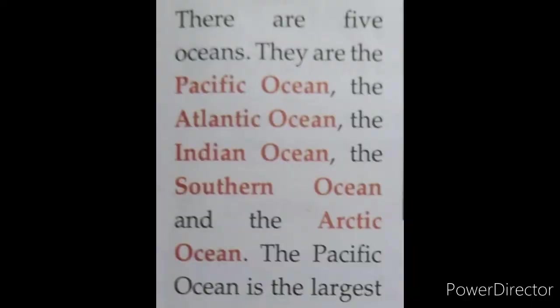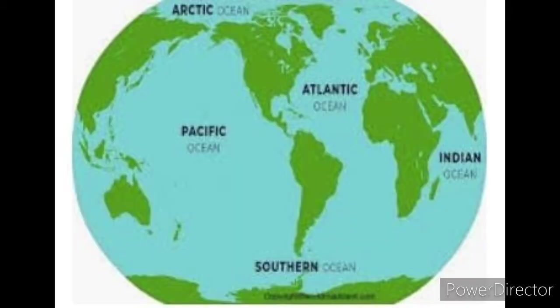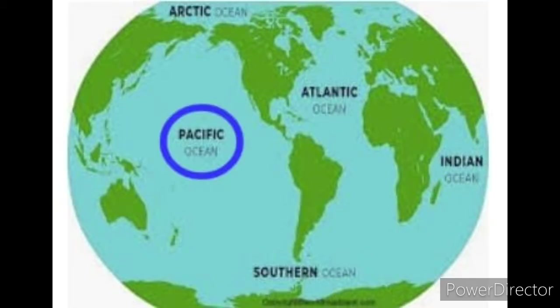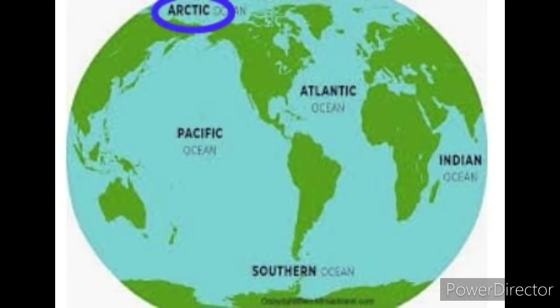There are five oceans. They are the Pacific Ocean, the Atlantic Ocean, the Indian Ocean, the Southern Ocean, and the Arctic Ocean. The Pacific Ocean is the largest among the five oceans. The smallest ocean is the Arctic Ocean.